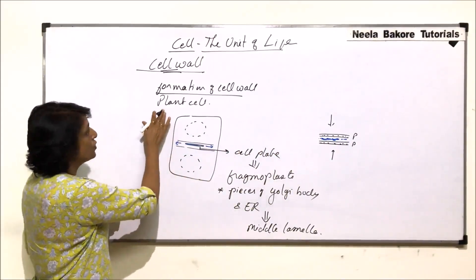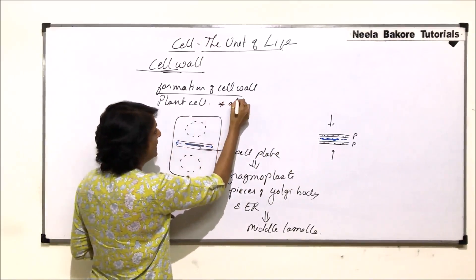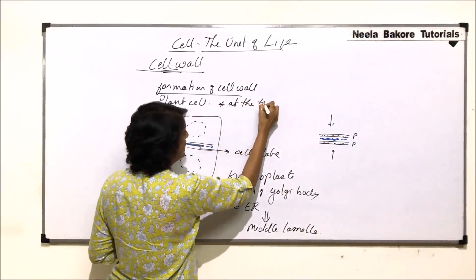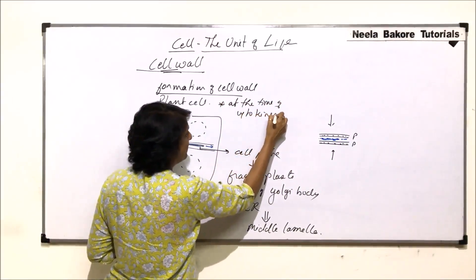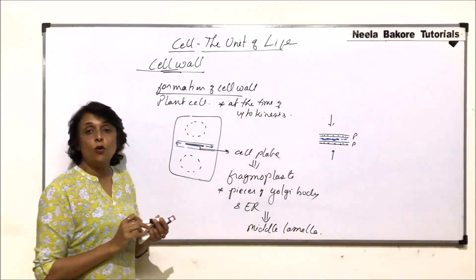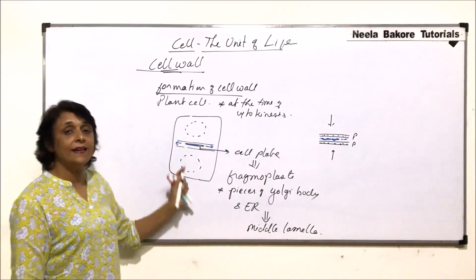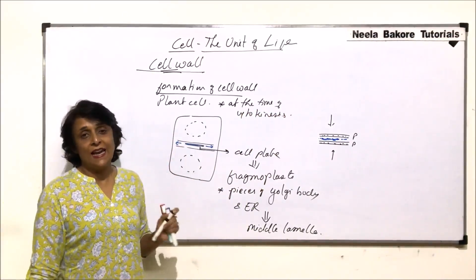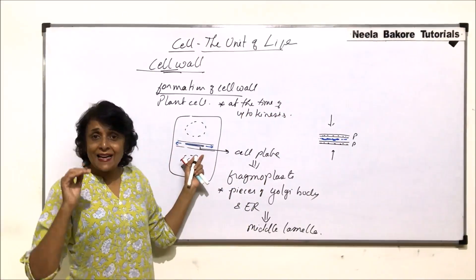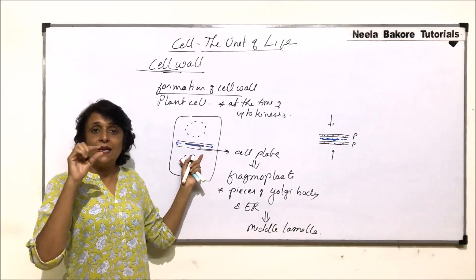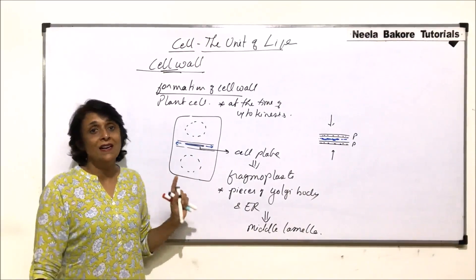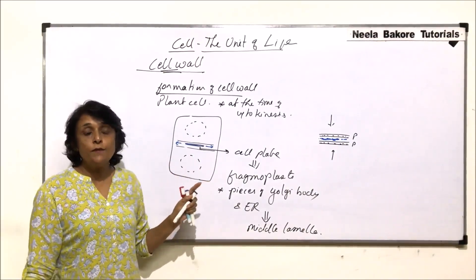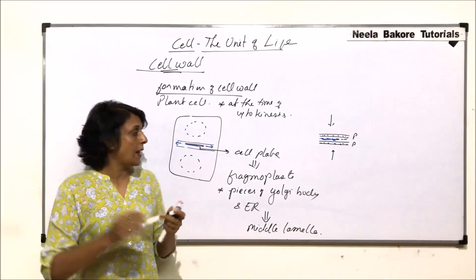This is what happens during cytokinesis. Formation of cell wall takes place at the time of cytokinesis when the cell divides and the daughter cells are to be formed. At that time this cytokinesis takes place. That means the middle lamella is the middle layer and on either side of it there is cellulosic cell wall.